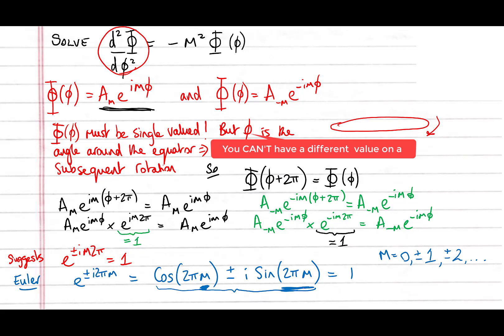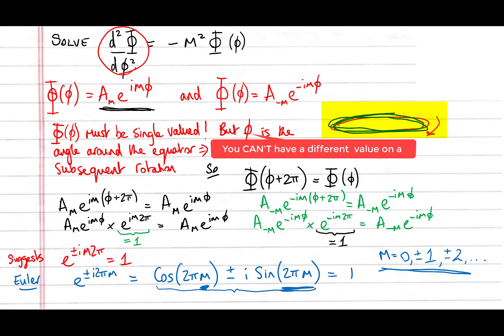So the allowed values of m fall directly out of the mathematics. m must equal 0, ±1, ±2, and so on — these integer values maintain the single-valued condition as we move around the equator of the system.